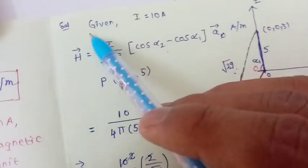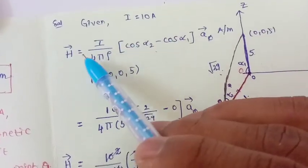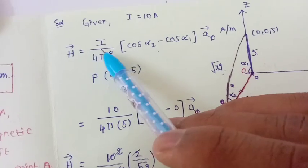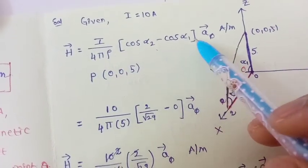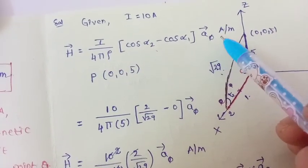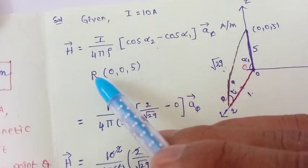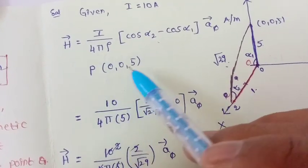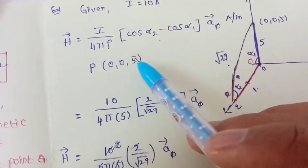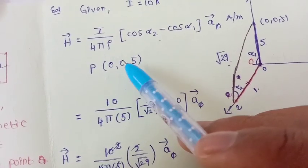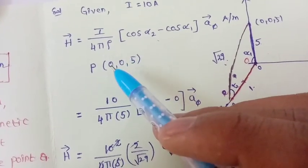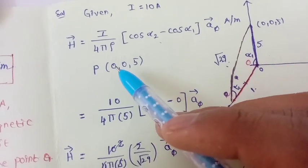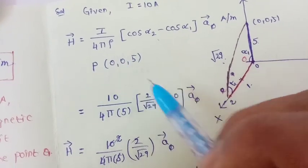The formula is: the magnetic field intensity H is equal to I upon 4π times rho, multiplied by (cos α2 minus cos α1), along the phi direction, in amperes per meter. Now we have to determine the magnetic field intensity at this point. If you observe, x is 0 and y is 0 at the point itself.